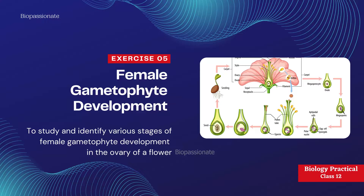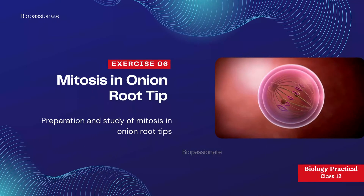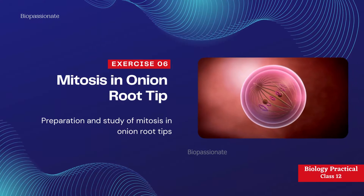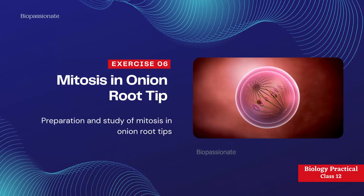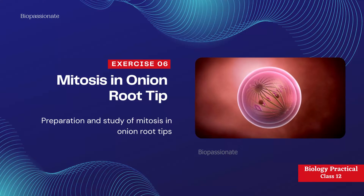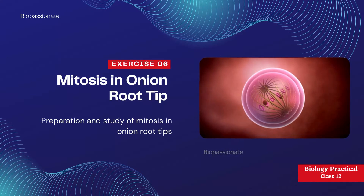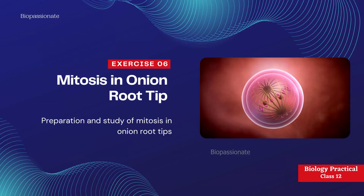Exercise number five: female gametophyte development — to study and identify various stages of female gametophyte development in the ovary of a flower. Exercise number six: mitosis in onion root tip — preparation and study of mitosis in onion root tips. This is a compulsory question for your annual practical examination; students need to prepare and identify the stage of mitosis.